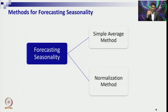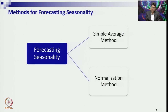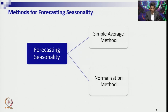Many methods exist to calculate the seasonal index. Today we will concentrate on two: the simple average method and the normalization method. The simple average method is sometimes called the quarterly average method because quarterly data most commonly exhibits seasonality. We will first understand the simple average method for monthly and quarterly data, then extend the discussion to the normalization method.